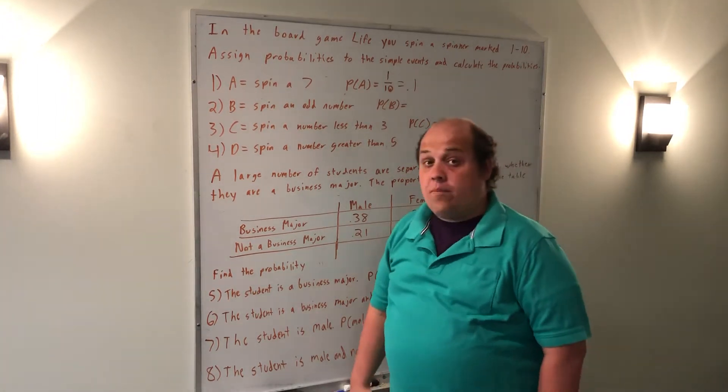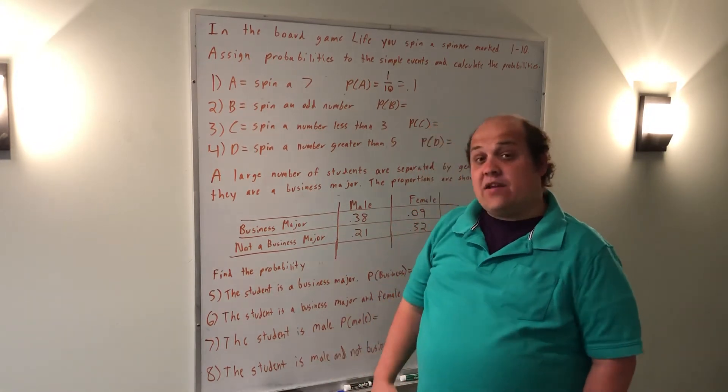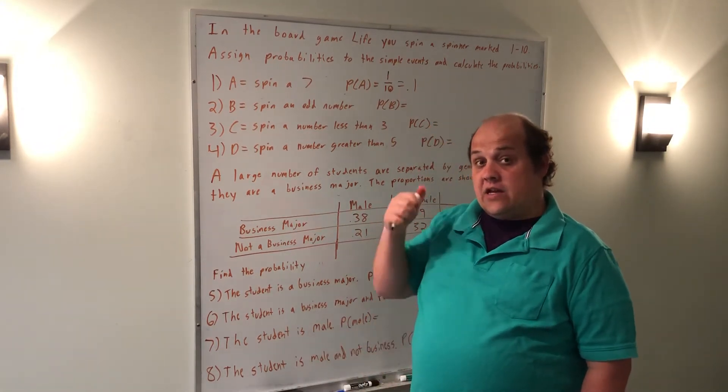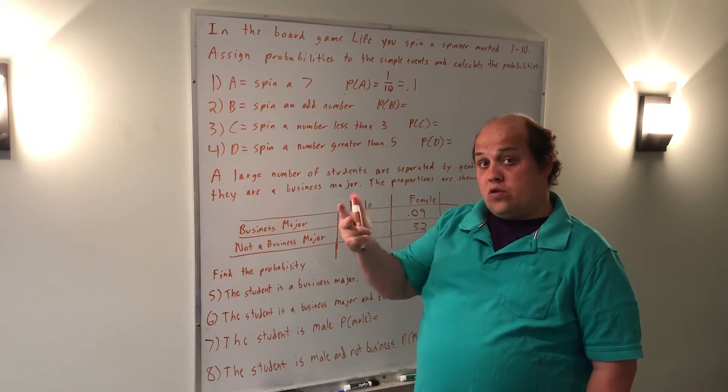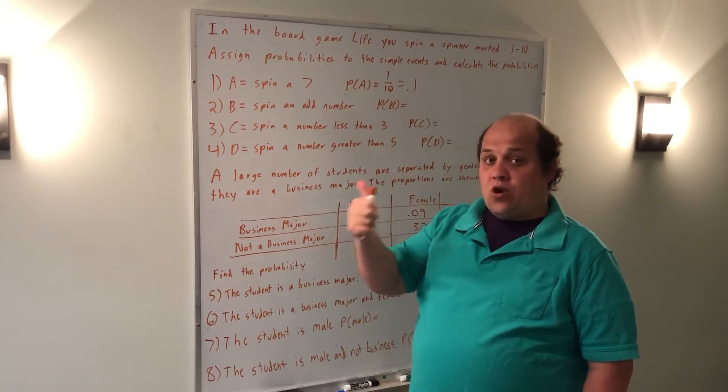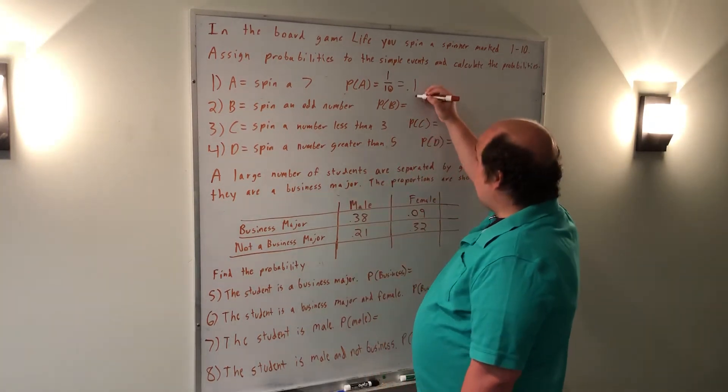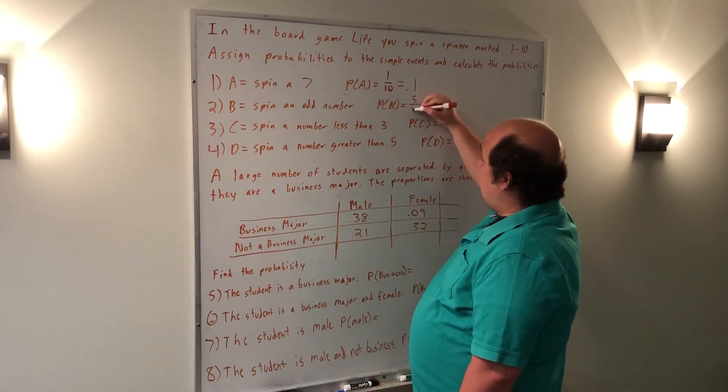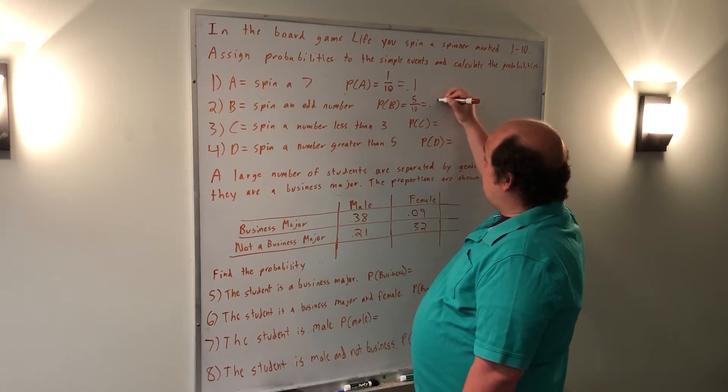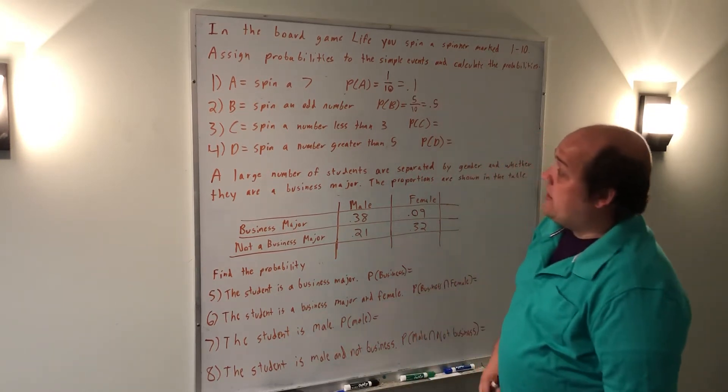For spinning an odd number, there were 5 events that counted in that space. It counted spinning a 1, 3, 5, 7, or 9. That's 5 total numbers out of the 10 possibilities, which means the probability of spinning an odd number is 0.5.